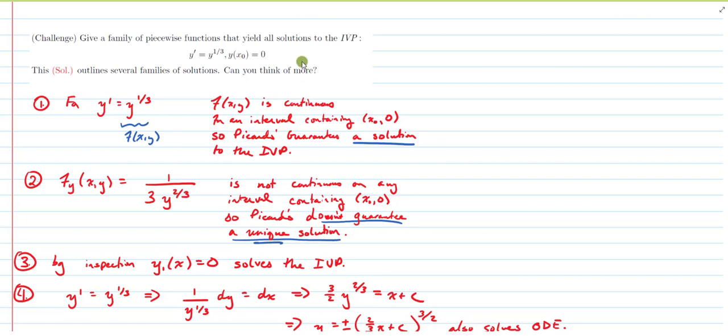But this gives us an interesting situation where we actually write out a number of the non-unique solutions to an IVP. So here you can see we've got the given ODE and some initial condition that just requires that regardless of what our initial time value is, the initial y value, the initial population amount or whatever we want to think of, is zero.